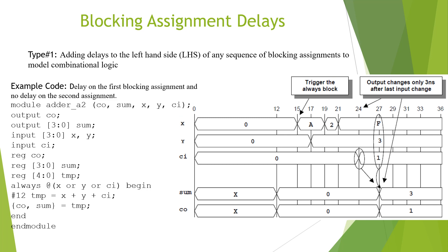In this slide we took the same adder example and slightly modified the code so that the assignment happens in two steps. The first step is calculating the value of the addition and putting it in a temporary variable with a delay on the LHS, and then in the next step we assign that value to the outputs. The behavior of the waves is the same — the output changes at time 27, and the latest change on ci is at 24, so the difference is only 3 nanoseconds, which does not match the actual hardware requirement of 12 nanoseconds.